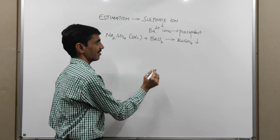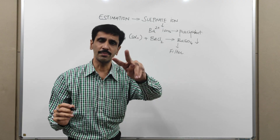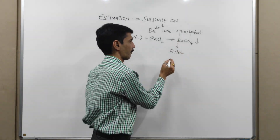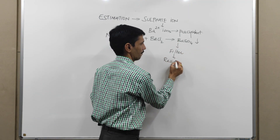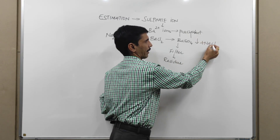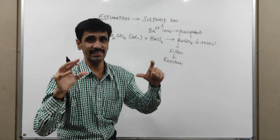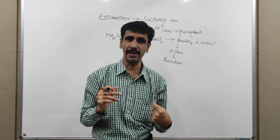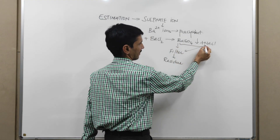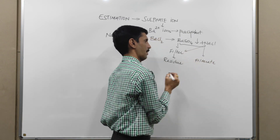In this particular experiment, we are going to use Whatman paper number 42. Upon filtration, we get two possible parts: one is the residue, which is retained by the filter paper — and that is barium sulfate. Along with that, there is NaCl, which will pass through the filter paper as filtrate.